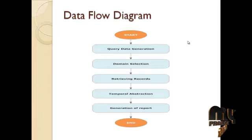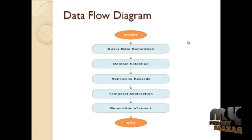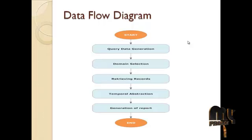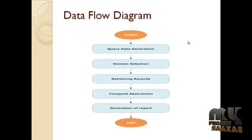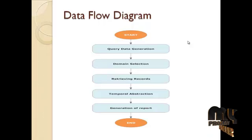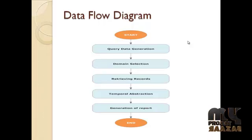The user needs to select the disease for which they need to retrieve the treatment process from the already existing records. After selection of the disease, the user needs to provide various stages of time sequences related to the symptoms. These time sequences are gathered in the query generator, which acquires all the information and carries it forward for domain selection.